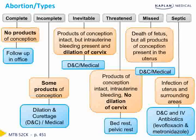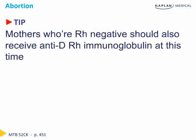This is a very high-yield slide for the Step 2 exam. As a reminder of a commonly tested topic: anytime you have a mother who is RH negative and presents with first trimester bleeding, she should receive anti-D RH immunoglobulin. The medication needs to be given within 72 hours of onset of bleeding to be most effective.